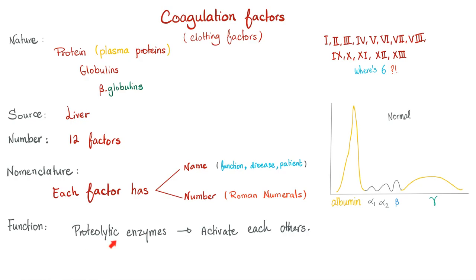The function of coagulation factors: they are proteolytic enzymes. There's no contradiction between being a protein and being an enzyme — all enzymes are proteins. They catalyze proteolysis reactions, meaning breaking down proteins, and that's why they activate each other. We go down the cascade: 12, 11, 9, 8 activate factor 10; then with factor 5 we activate prothrombin (factor 2) into thrombin; then fibrinogen (factor 1) into fibrin. That's the cascade.